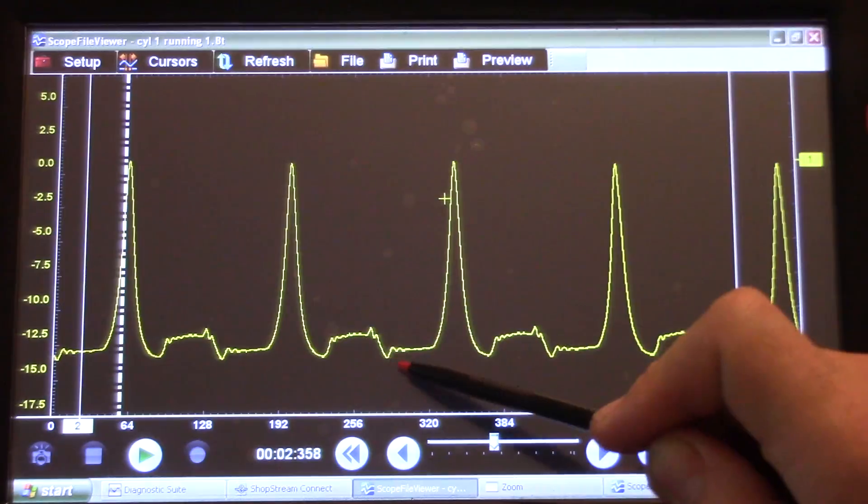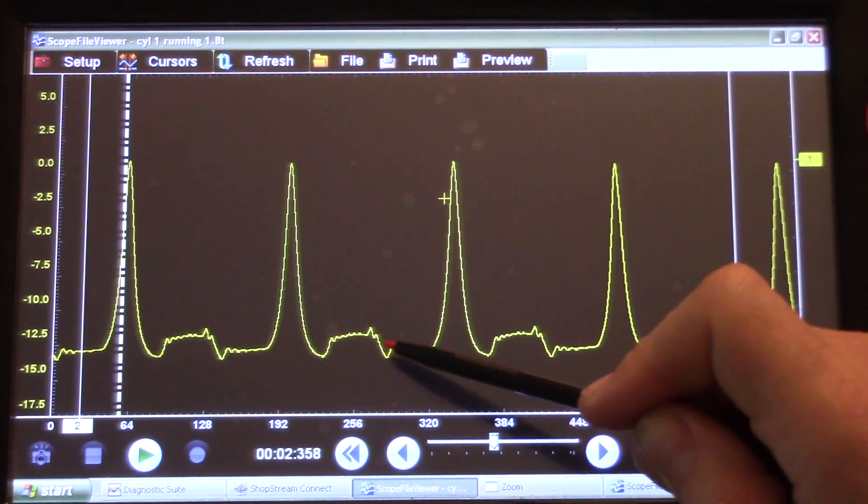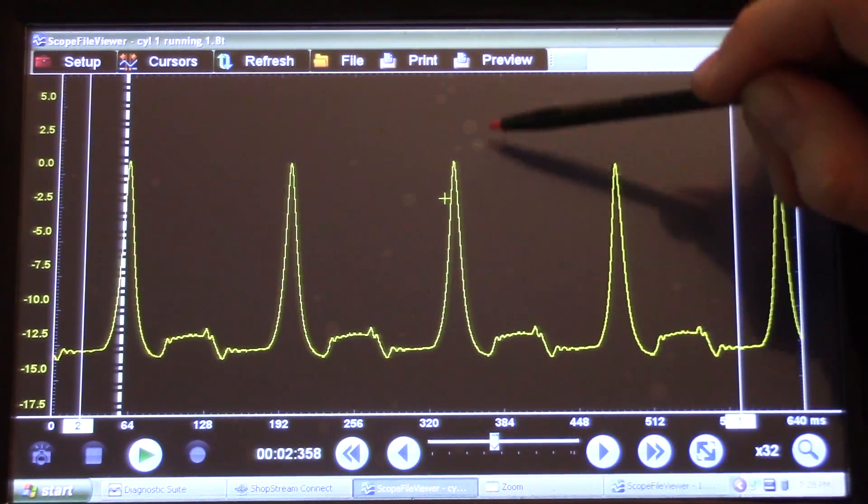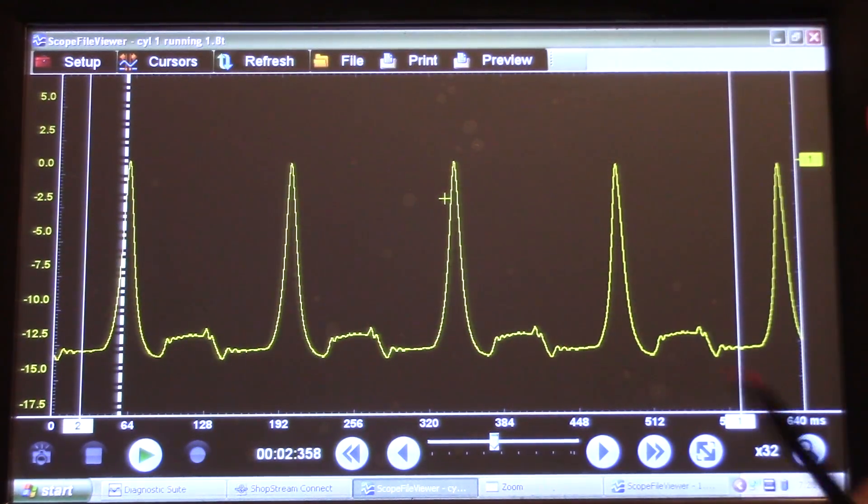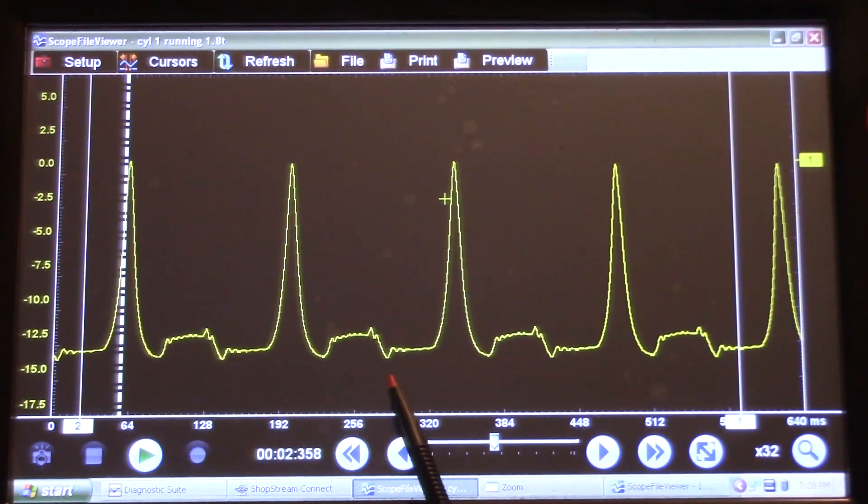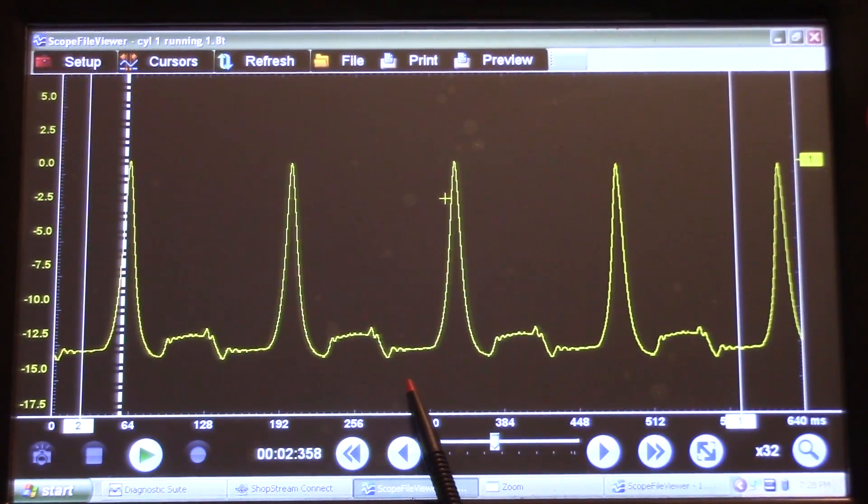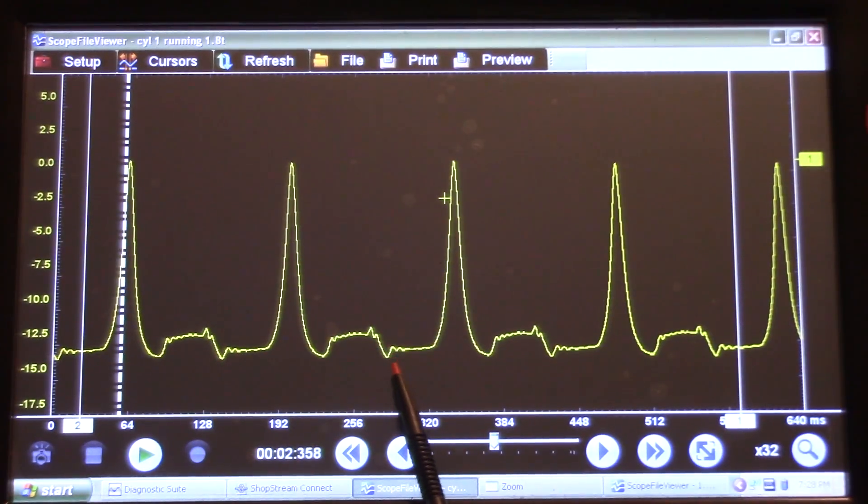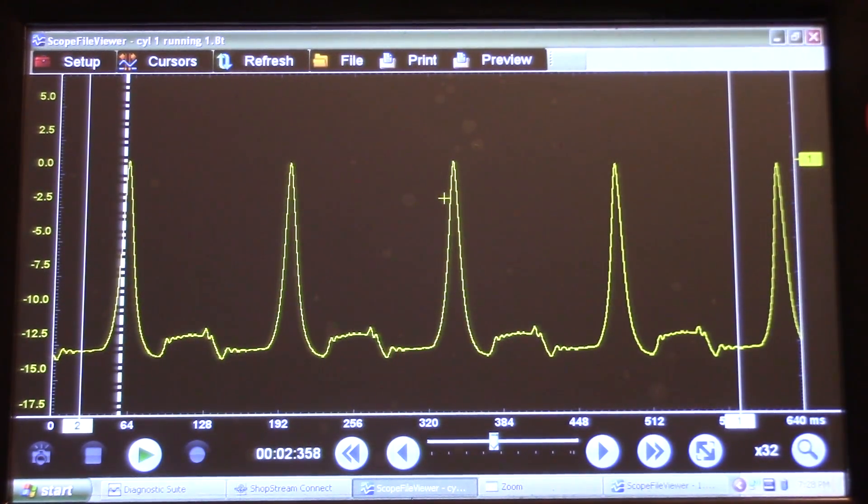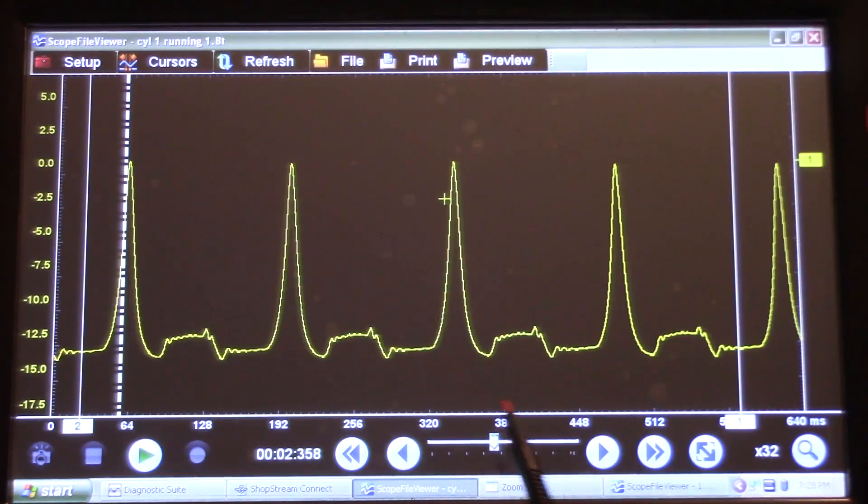And then our intake valve starts to open up right here. And that's why we have that deep pocket and kind of like a loss of vacuum. And back into our compression stroke. So that's what that is right there. The valve timing being a little late on the intake cam. Basically, this piston going down is pulling on nothing, and it's an instant vacuum because both valves are closed when really the intake valve should be open. So let's go to a known good.